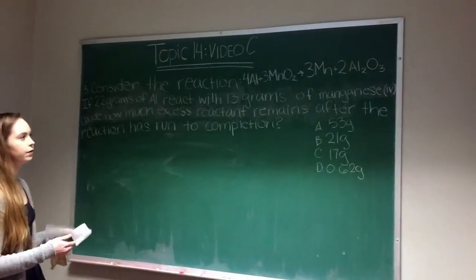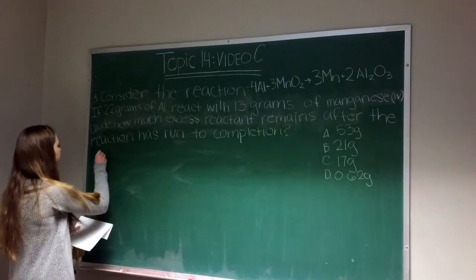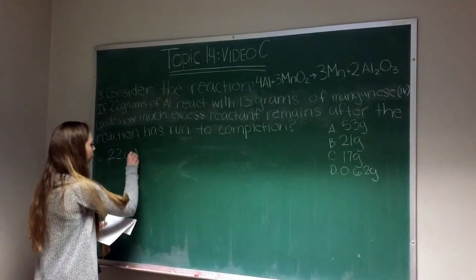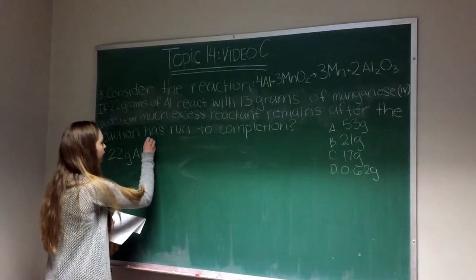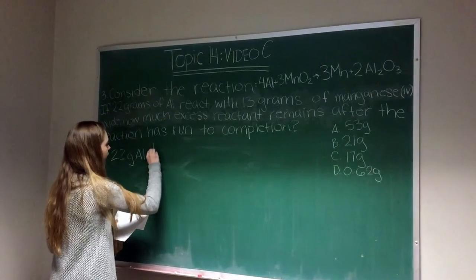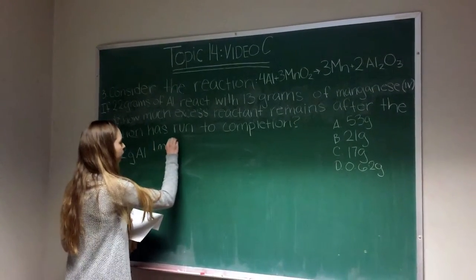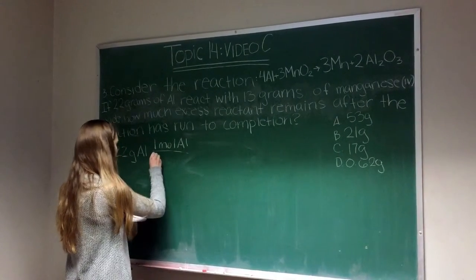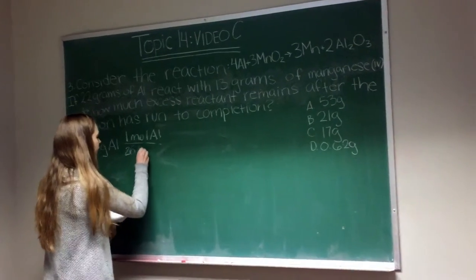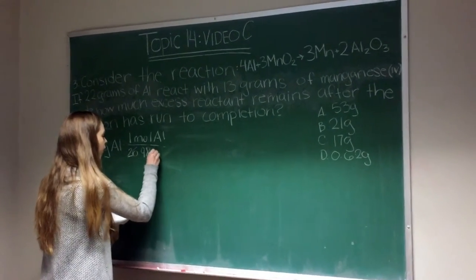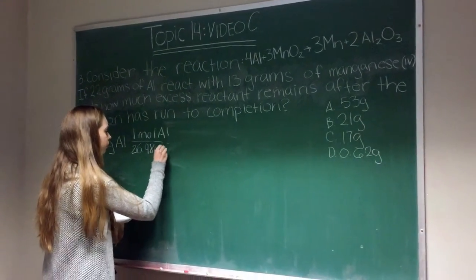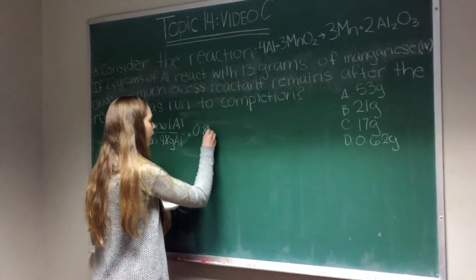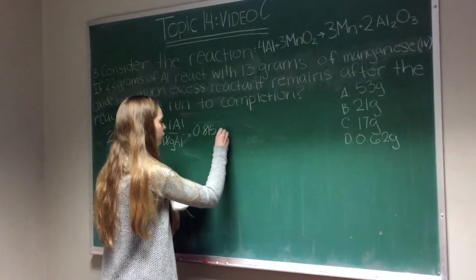First we're going to need to figure out how many moles we have of each reactant. I'll take the 22 grams of aluminum and multiply it by 1 mole of aluminum over its molecular weight, which is 26.98 grams of aluminum. This gives us 0.815 moles of aluminum.